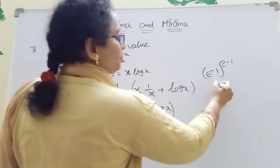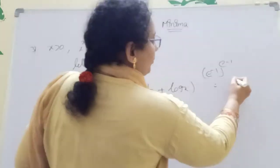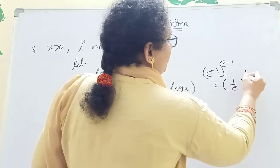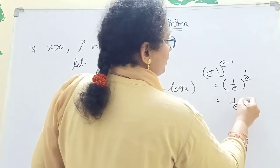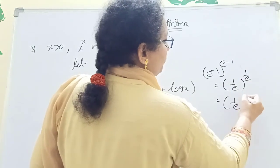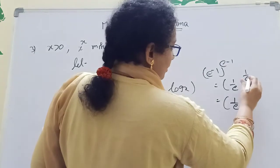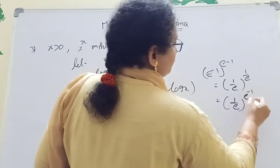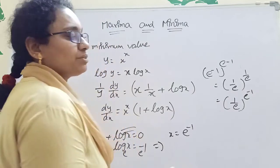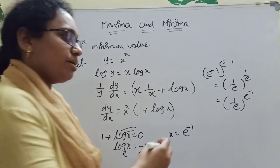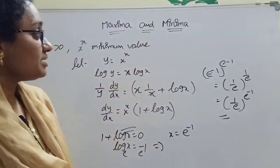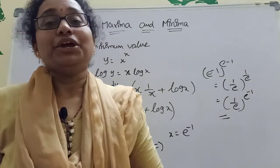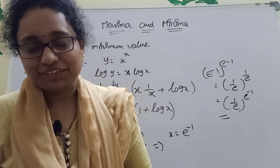Now find the minimum value of x^x by substituting X = e^(−1) = 1/e. So the minimum is (1/e)^(1/e), which equals e^(−1/e). This is the answer — a very important trick. Watch carefully and you will get good marks. Thank you.